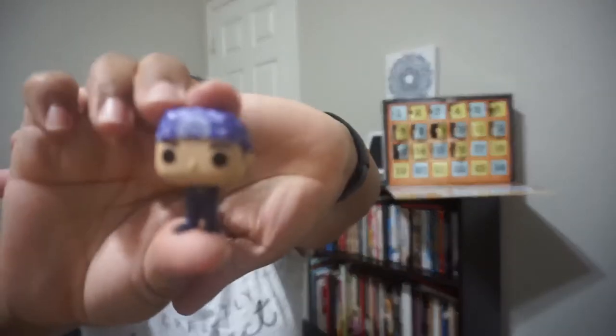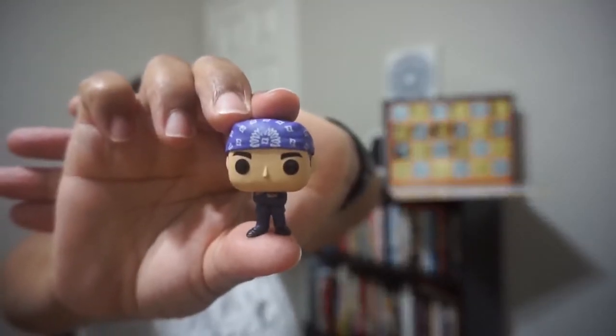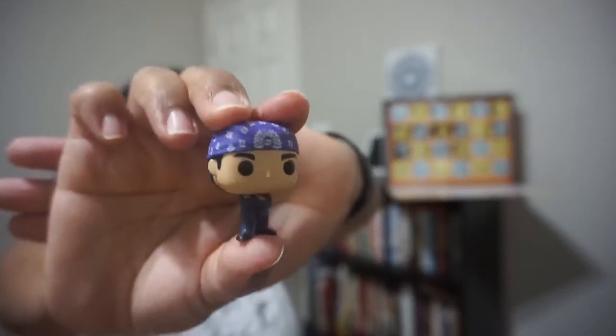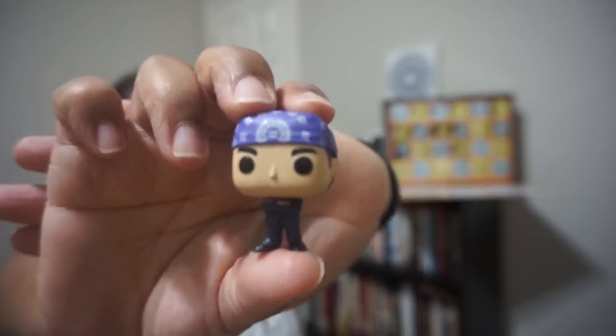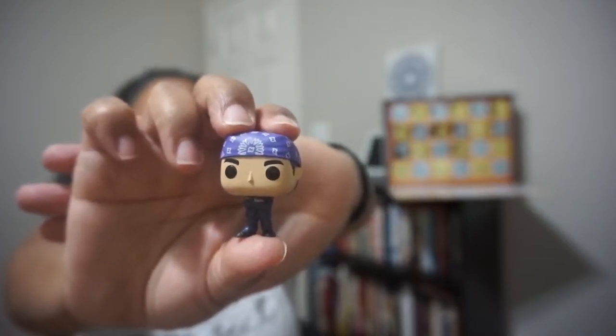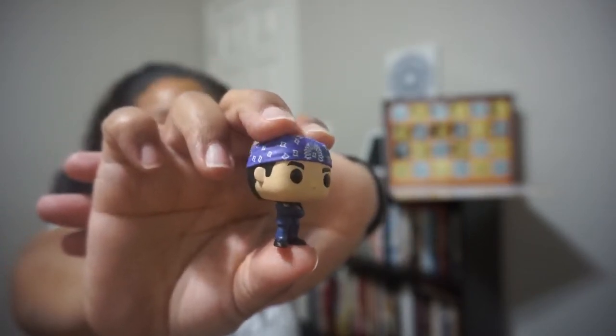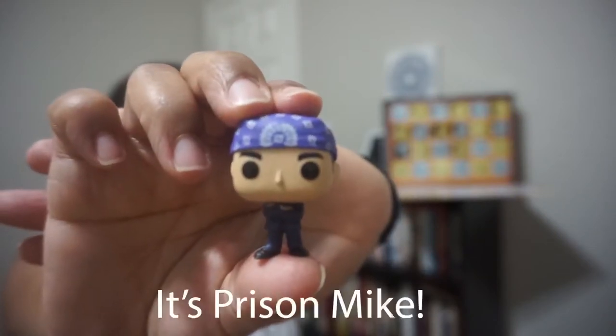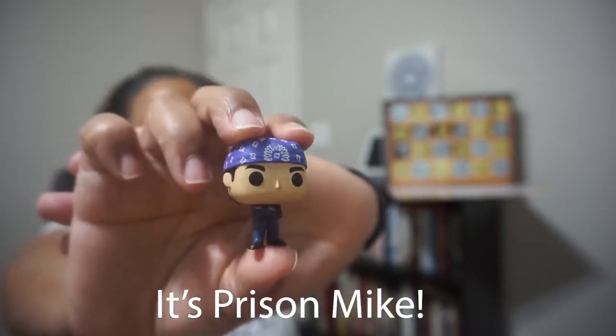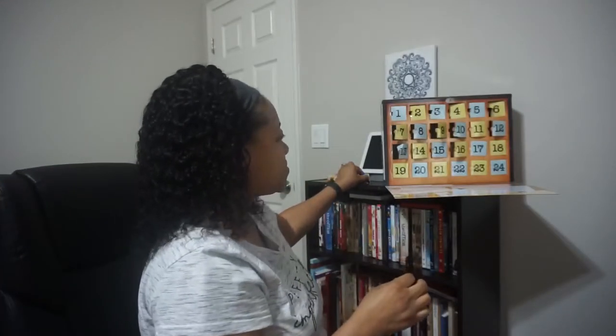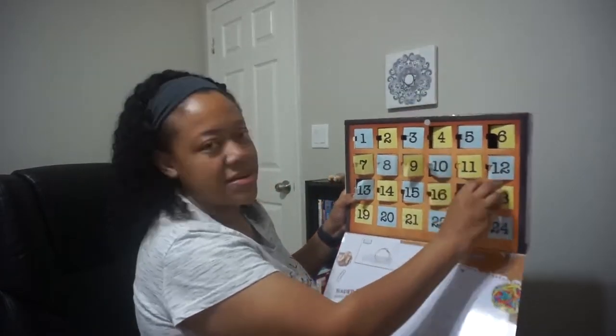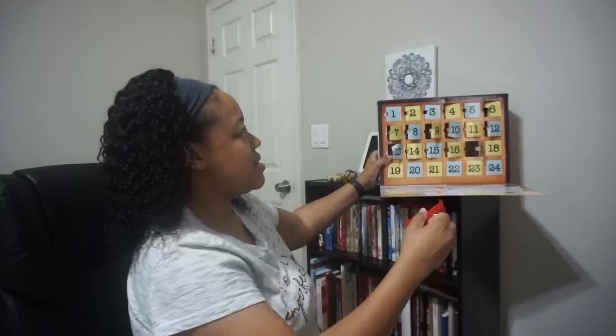Door number 16. Moving right along. This is Michael Scott. And he is wearing a bandana. Now I can't remember the song that he was singing or something that he was doing. But I don't know if he was like cool Michael Scott or something like that. But super, super great detail. Love this figure. Number 17.